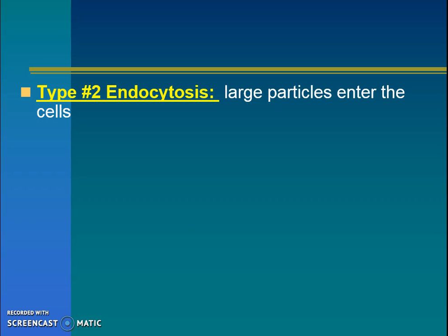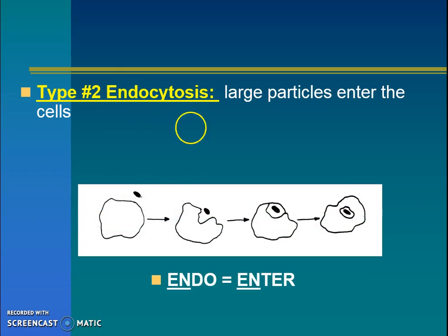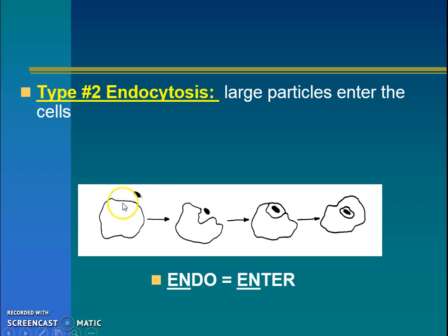Our second type is endocytosis. This is how large particles can enter the cell. Notice that the word 'enter' starts with the same letters as the word 'endo' — endo, enter. This is how especially single-celled creatures like amoeba, which are protists, eat things. As this single-celled creature eats this darker-colored little creature, it'll actually engulf it or swallow it by putting its body around it. So as this food particle enters, we call that endo — endo, enter.